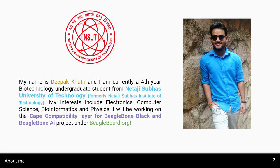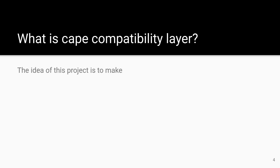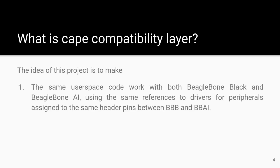Over this summer, I will be working on the CAPE Compatibility Layer for BeagleBone Black and BeagleBone AI project under BeagleBone.org. BeagleBone Black and BeagleBone AI are both mechanically — as in hardware form factor — and pin header compatible, as they both provide a similar set of peripherals over their P8 and P9 expansion headers. My project will explore those functionalities to create a CAPE Compatibility Layer.